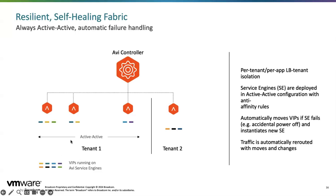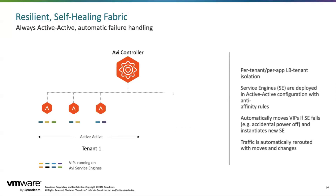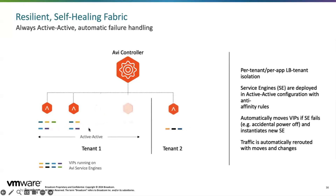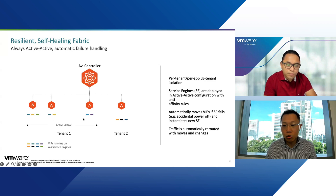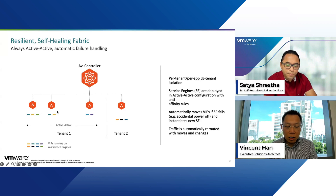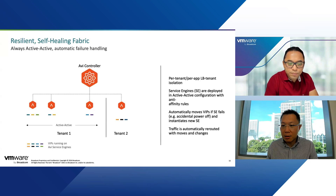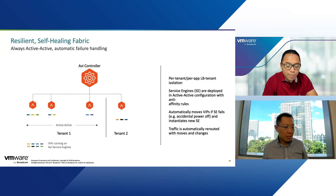With the active-active setup, if one service engine fails, services get redistributed to the working ones. If the failure lasts long, the AVI controller detects it and automatically creates a new instance of the service engine, and traffic is redistributed automatically without any user intervention. Since services are distributed across multiple nodes, when one fails, fewer services are impacted. For mission-critical workloads that need high resiliency and auto-healing features, the active-active setup in AVI is a significant benefit.